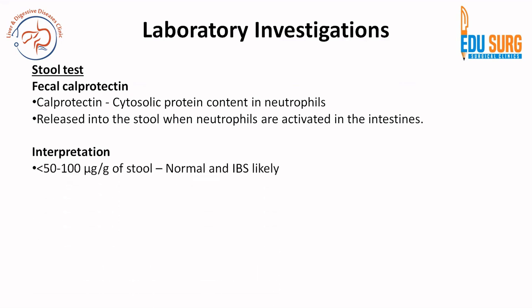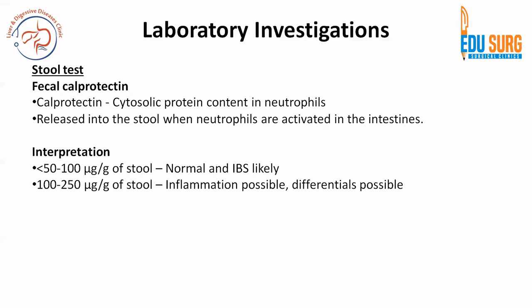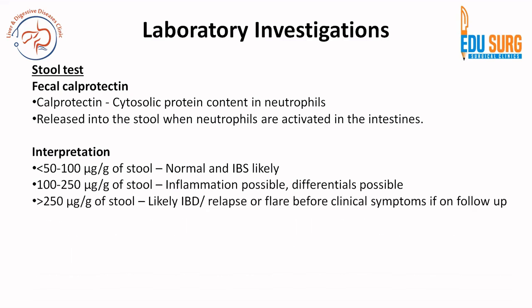Interpretation of the fecal calprotectin report: levels less than 50–100 micrograms per gram of stool are likely normal and IBS may be a differential. 100 to 250 is a gray zone where inflammation is likely. If the level is more than 250 micrograms per gram of stool, the patient likely has inflammatory bowel disease, or if already diagnosed, this indicates a relapse or flare before clinical symptoms on follow-up.